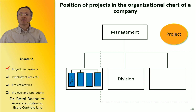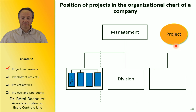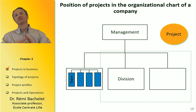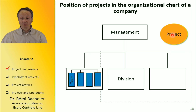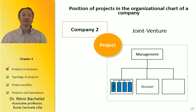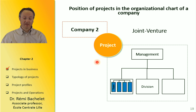Another case is when the project is fully outside the company organizational chart. The principle there is to have a lot of autonomy in the project, so you have a dedicated team. The last case is when you have two companies working together — in this case you have a joint venture, and the project is done in common with two separate organizations.